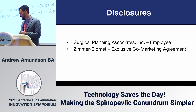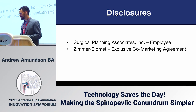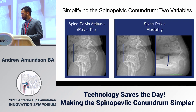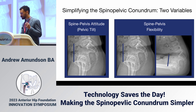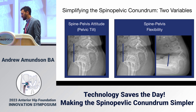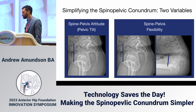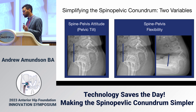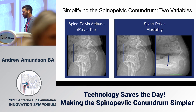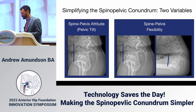The spinal pelvic conundrum can be distilled into two variables: spine pelvic attitude — pelvic tilt — and spine pelvis flexibility.